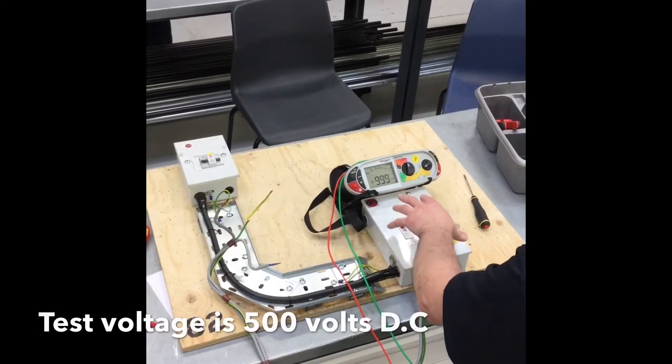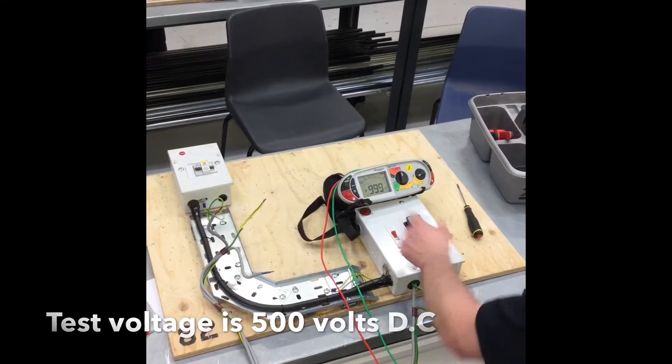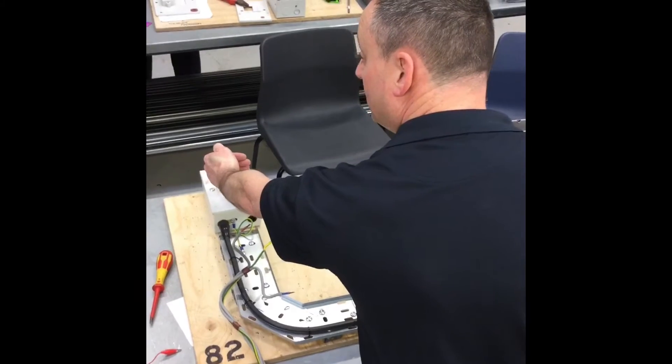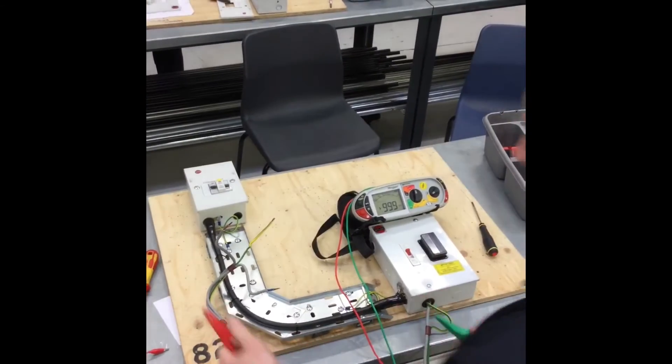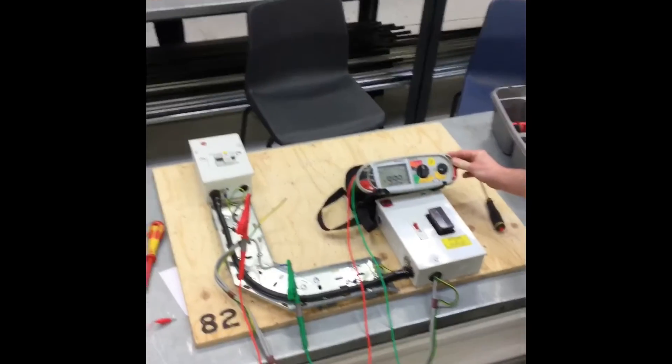damaged during this test when we pass 500 volts through it. Main switch is on, the fuse is installed, and we're going to do the test from the tails up to the top of the main switch of the sub main circuit. Connect between live conductors, press and hold.